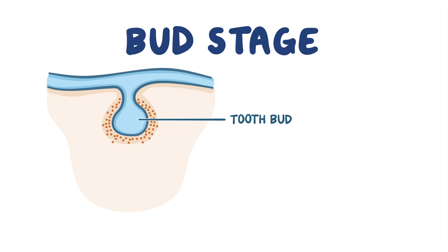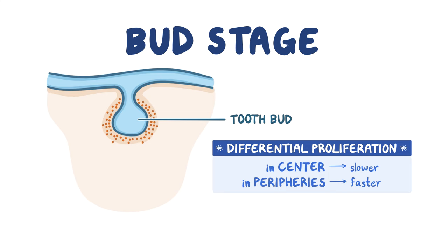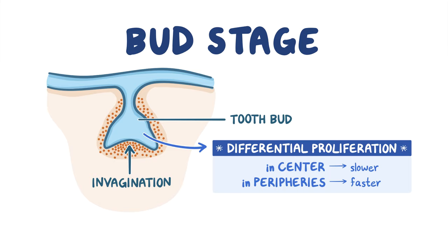The tooth bud is unique in that it has a differential proliferation of cells, meaning different parts of the bud grow at different rates. The cells at the center of the bud proliferate slower than those at the peripheries, leading to the formation of an invagination and turning the bud-shaped enamel organ into a cap shape. This is the start of the cap stage.